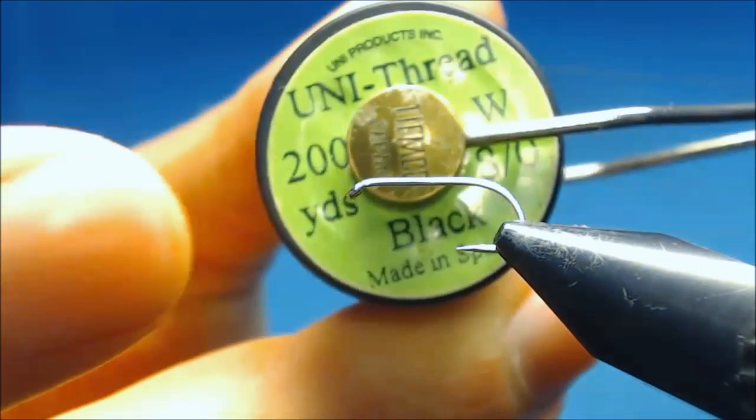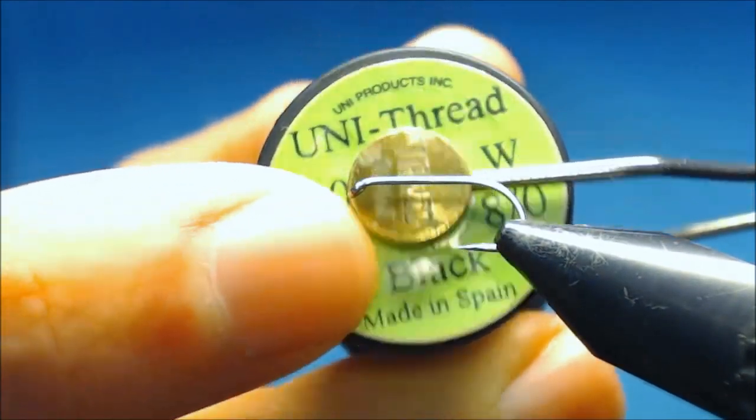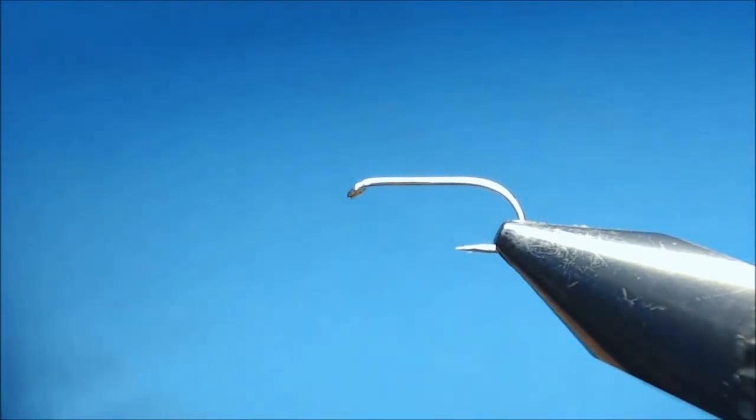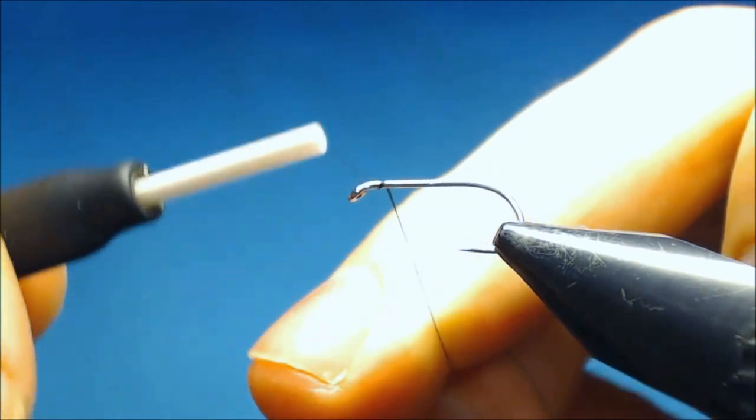For this fly I use the Uni-Thread 8-0 in black. You can also use brown or gray. And the hook is a standard wire size 12 hook.